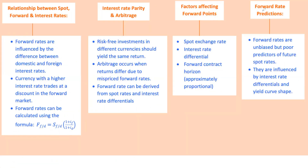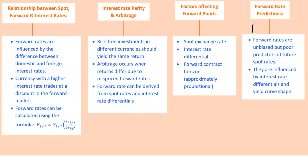Forward rates are unbiased predictors of future spot rates, but can be poor predictors because the relationship is counterintuitive. For instance, if domestic interest rates rise, we expect currency appreciation, but it might also indicate slower expected appreciation. Forward points are directly proportional to the spot exchange rate, interest rate differential, and the term of the forward contract.